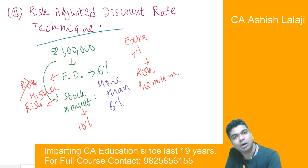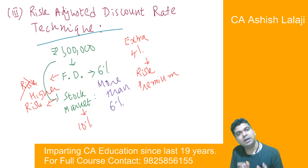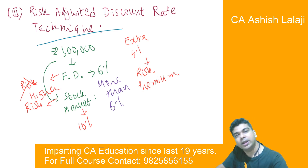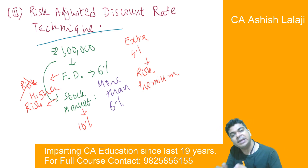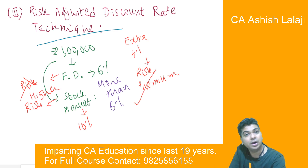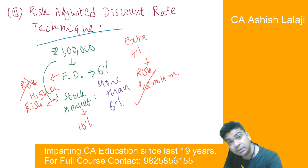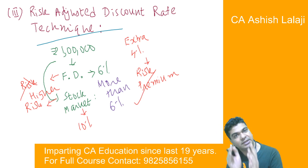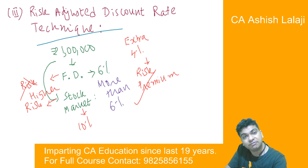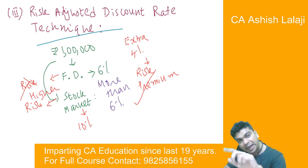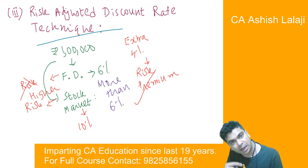This is what we are going to do in the risk-adjusted discount rate technique. In this technique, we will try to figure out when we are doing a project, are we taking more risk or less risk? On the basis of that, we will decide what should be our risk premium — higher, medium, or lower. This risk premium I will add to the risk-free rate of return. A project with higher risk will have a higher risk premium and thereby a higher discount rate.